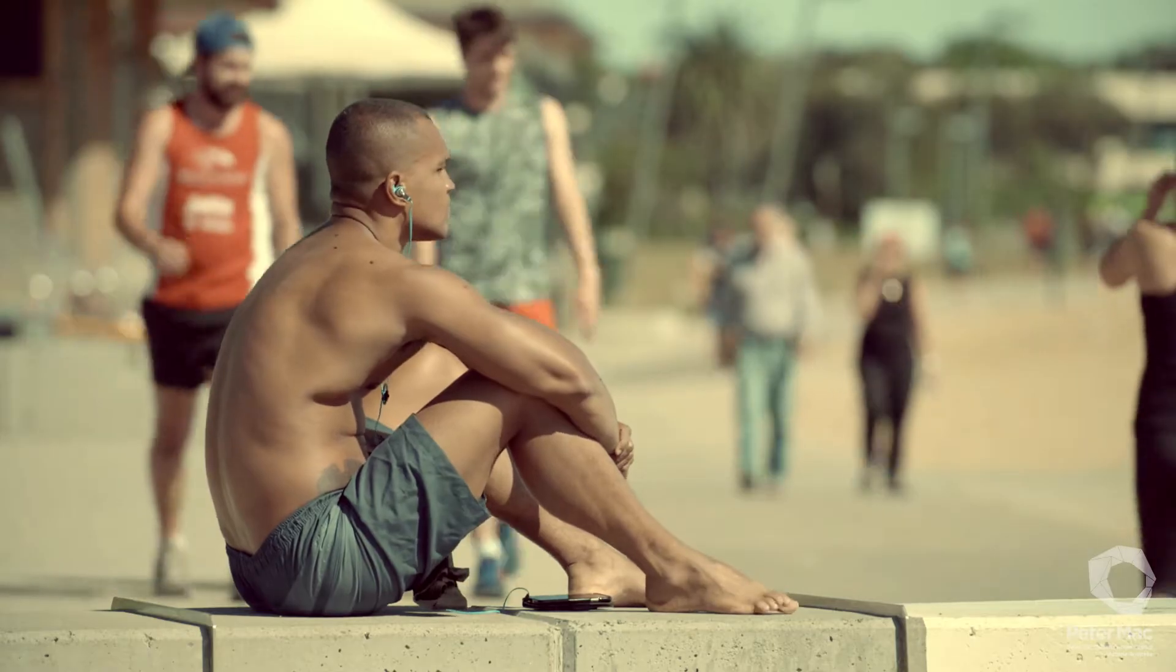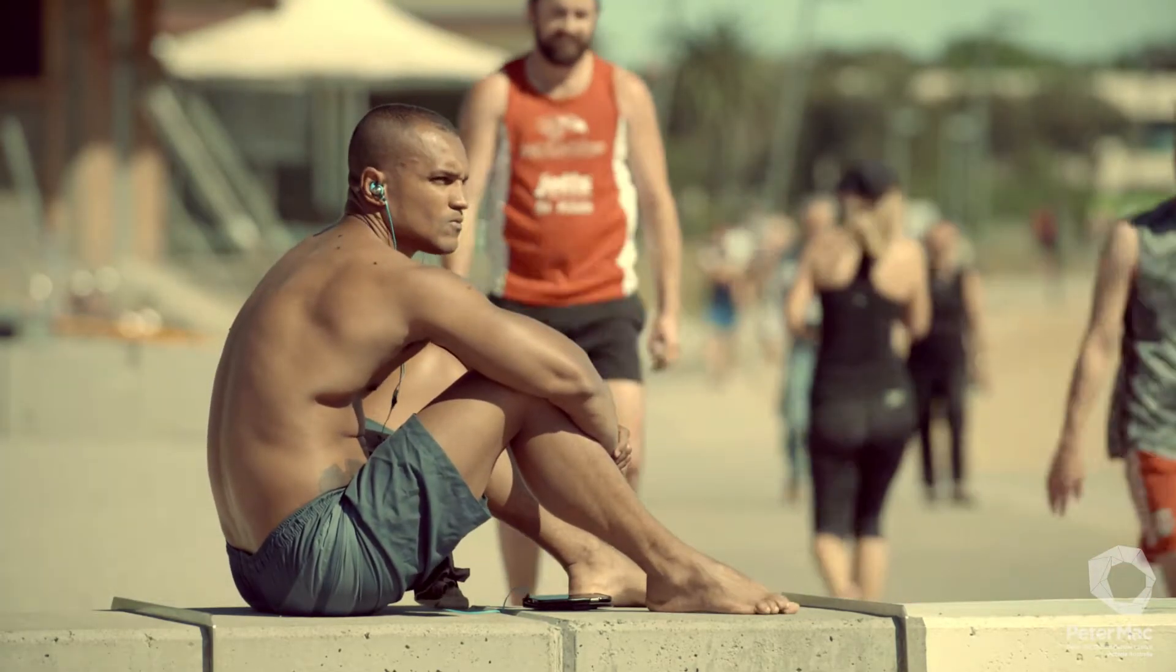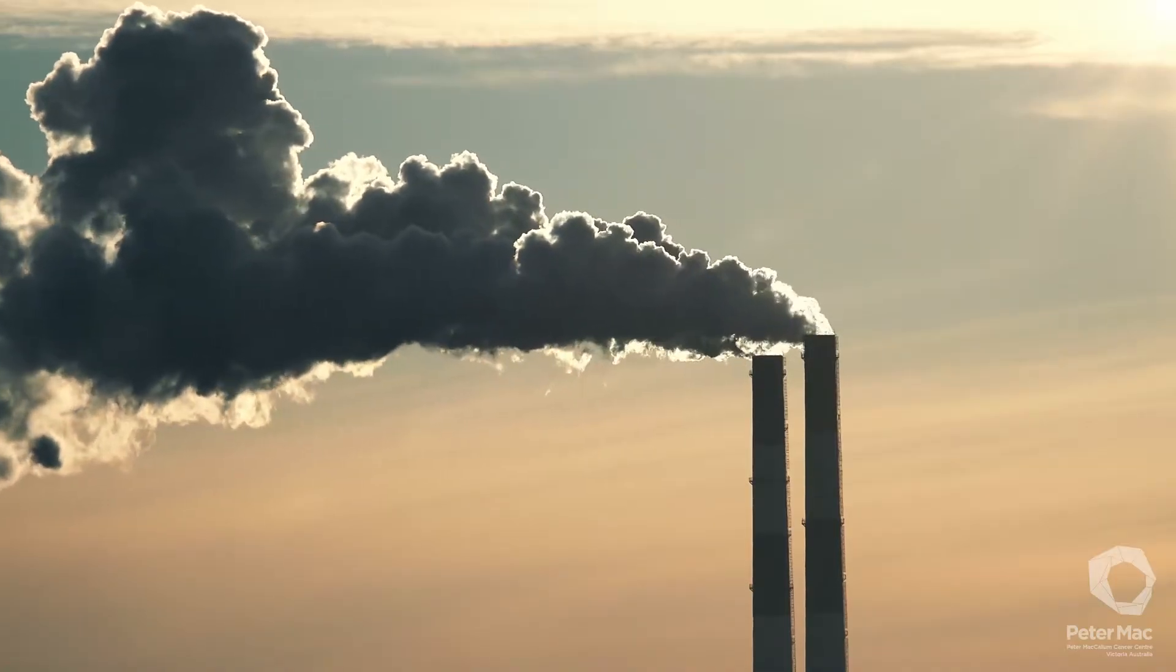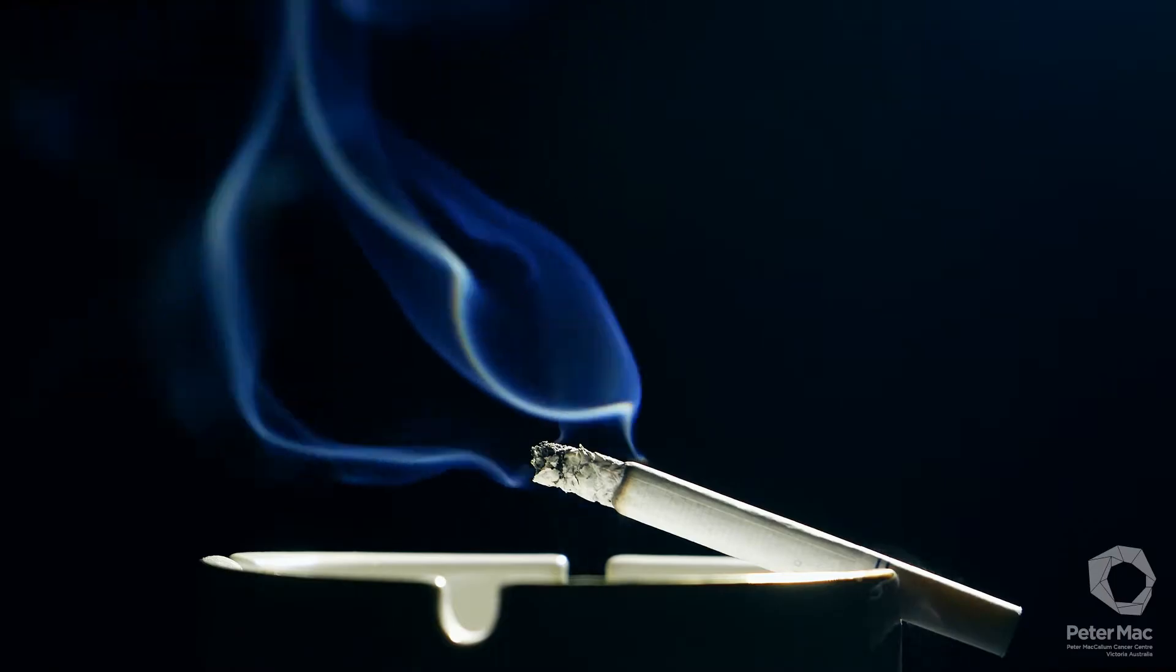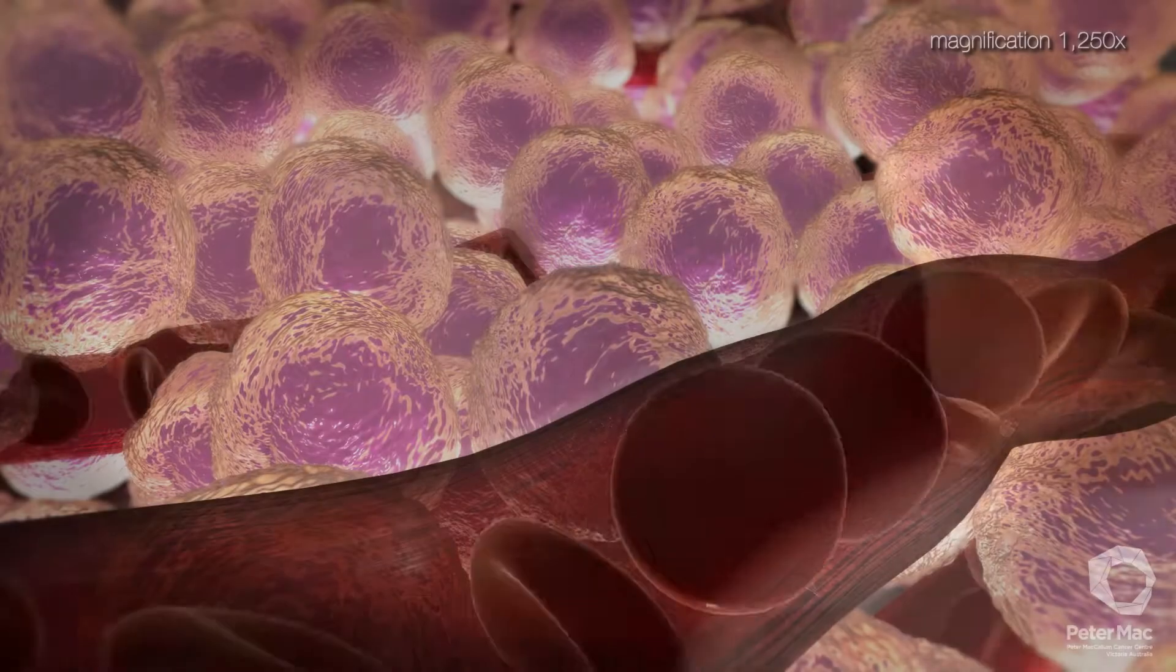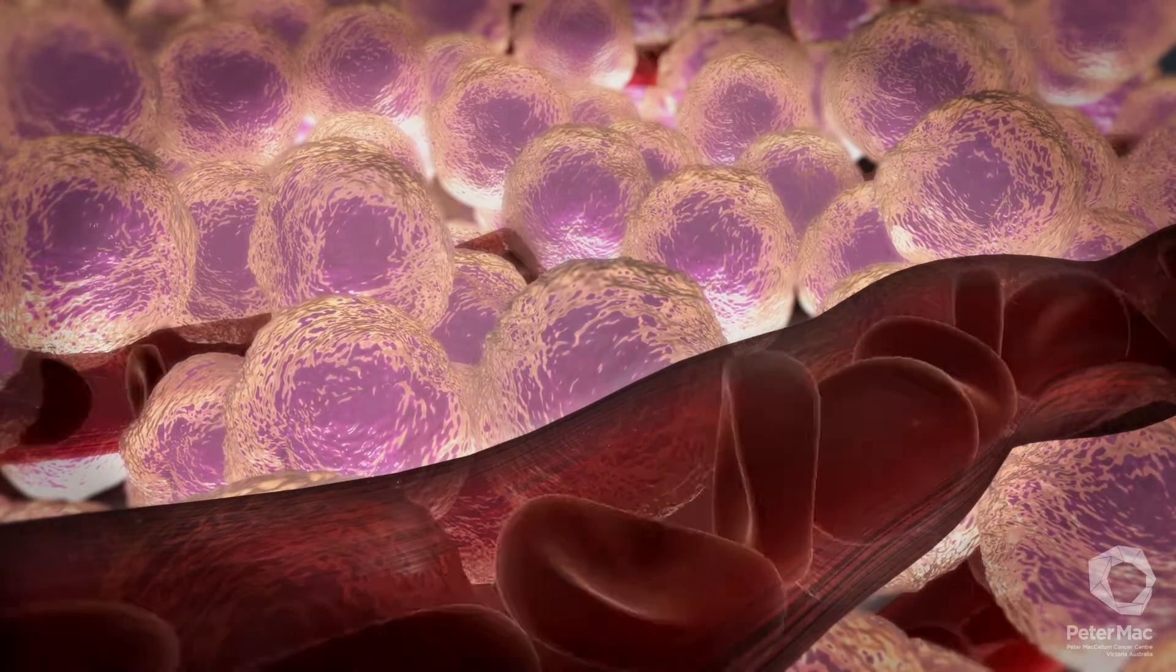Every day we are bombarded by environmental agents that damage our cells. Things like UV radiation and chemical exposure such as air pollution and cigarette smoke. Even the by-products of metabolism such as free radicals can damage cells. These damaging agents can make changes to the DNA in our cells.